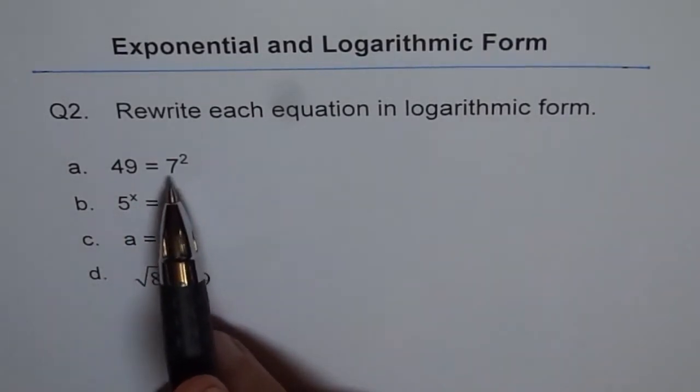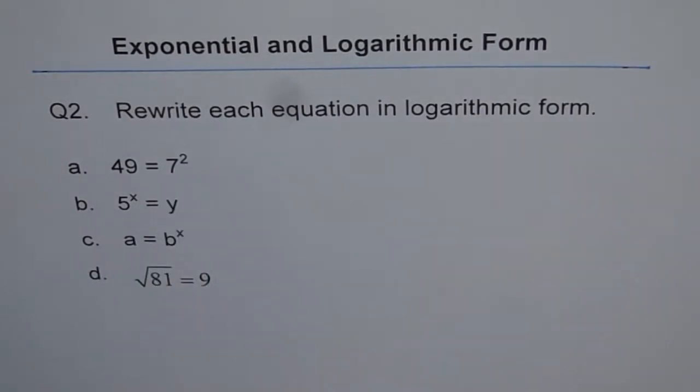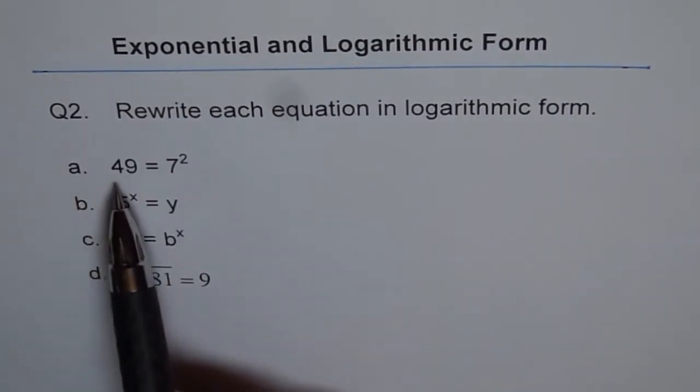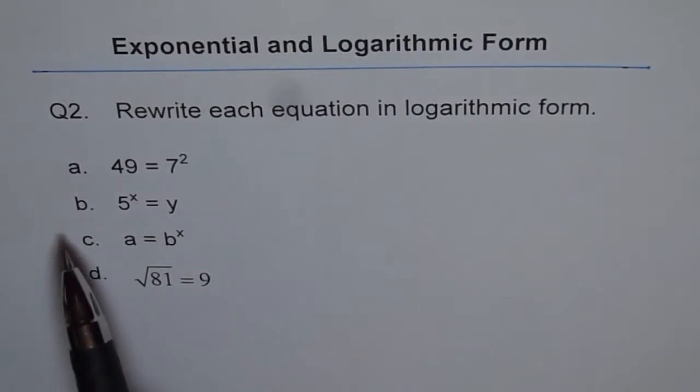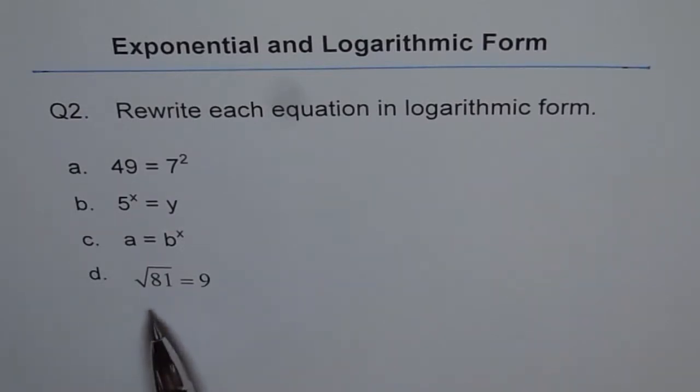Remember, base should be same as we did in question 1. A is 49 equals to 7 square, b is 5 to the power of x equals to y, c is a equals to b to the power of x, and d is square root of 81 equals to 9. You can do it yourself and then look into my solution.